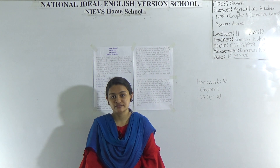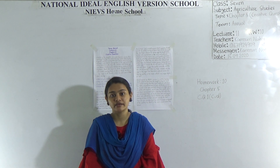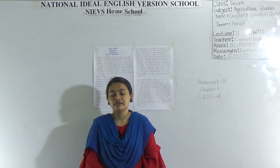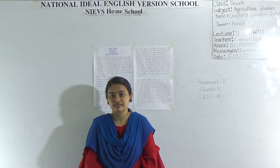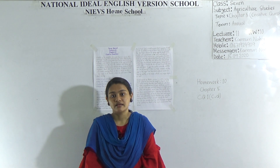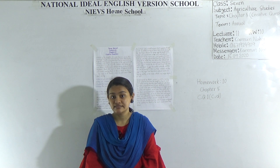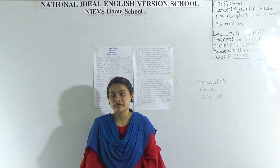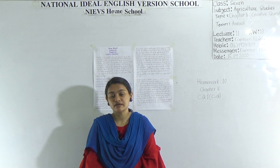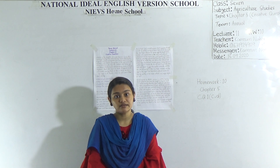My dear students, today I am going to take an Agricultural Studies class for the students of Class 7. Today I am going to discuss creative question answers from Chapter 5. We all know that the name of this chapter is Agricultural Production. So let's start the class.